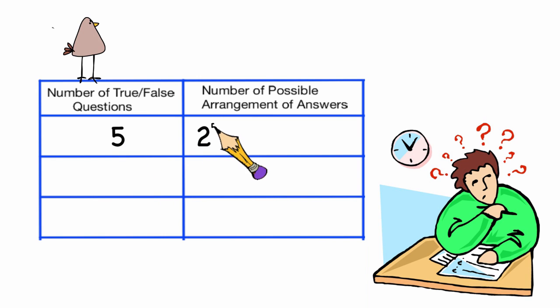When I write it as two to the fifth, I'm saying there are two choices for five questions. In this case, it doesn't matter which way we write the number, because the numbers are small, but sometimes it's easier to leave our answer in exponential notation.